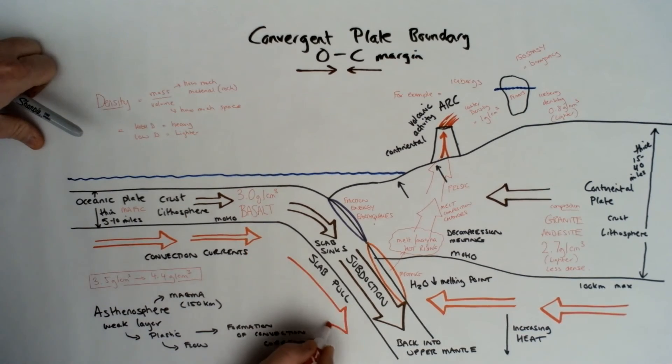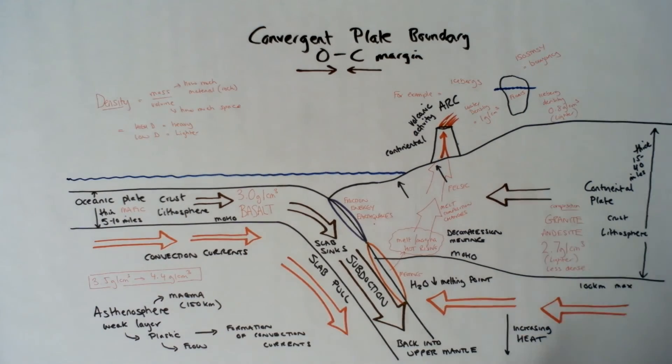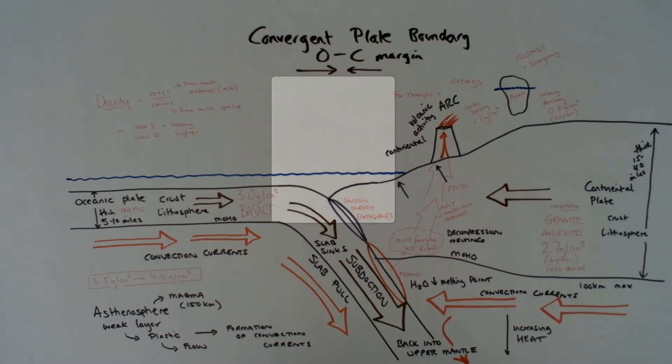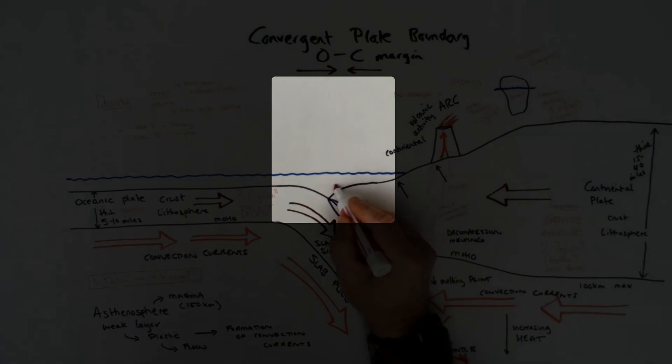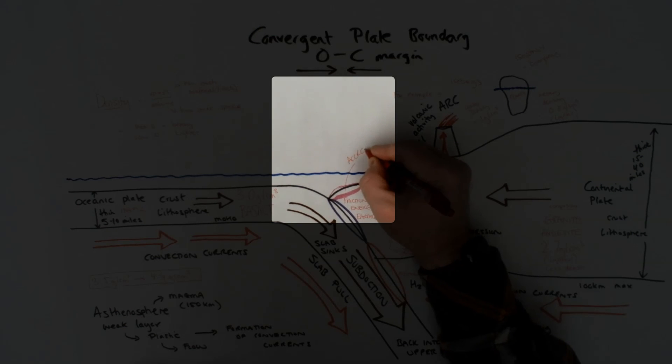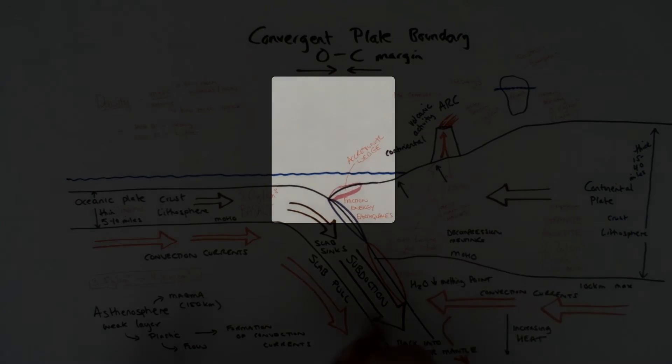Two features are also formed from the subducting oceanic plate. There's the ocean trench, which is going to be off the coast. It's the point where the subducting plate starts to dive down through slab pull and forms a deep part of the ocean. Then you have the accretionary wedge, which is part of the oceanic plate being scraped off and added onto the edge of the continental plate.